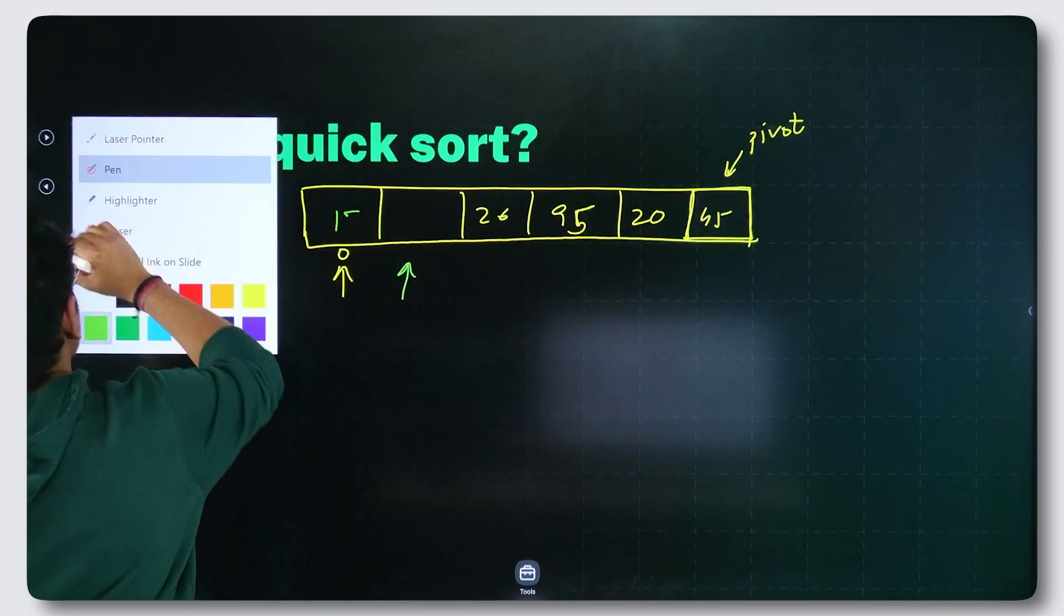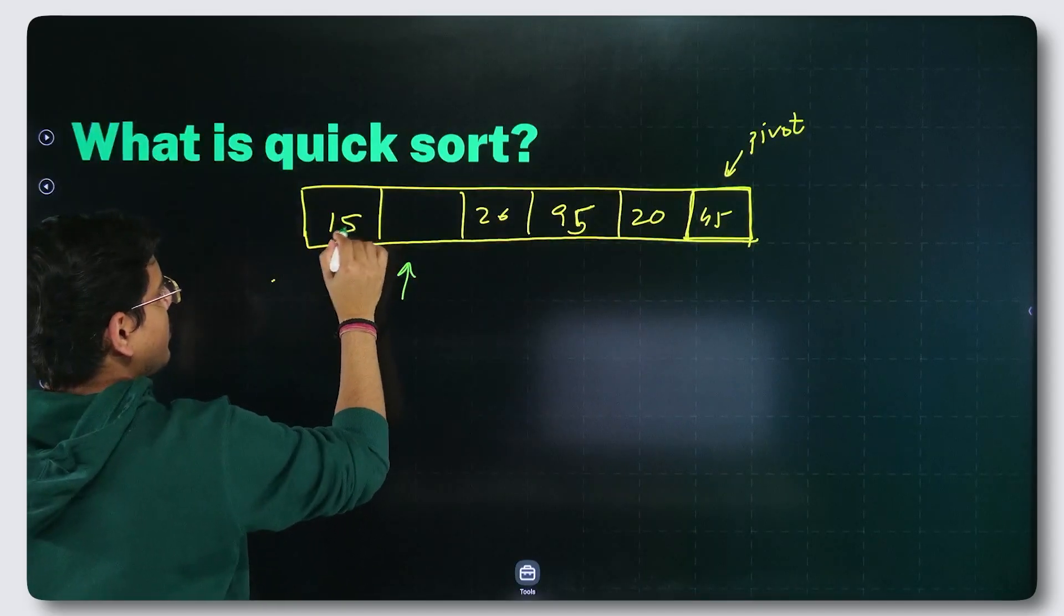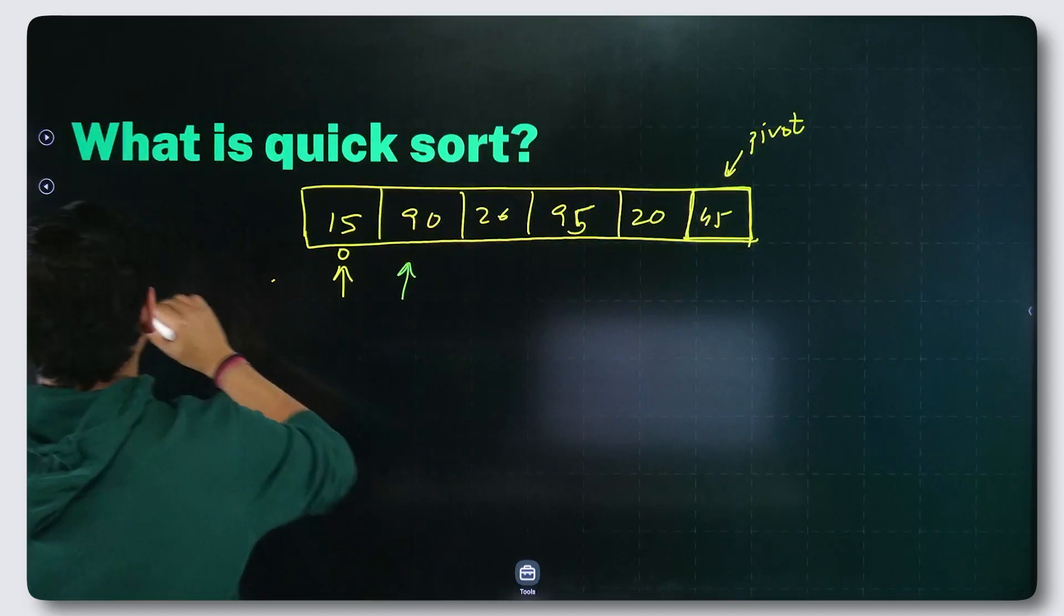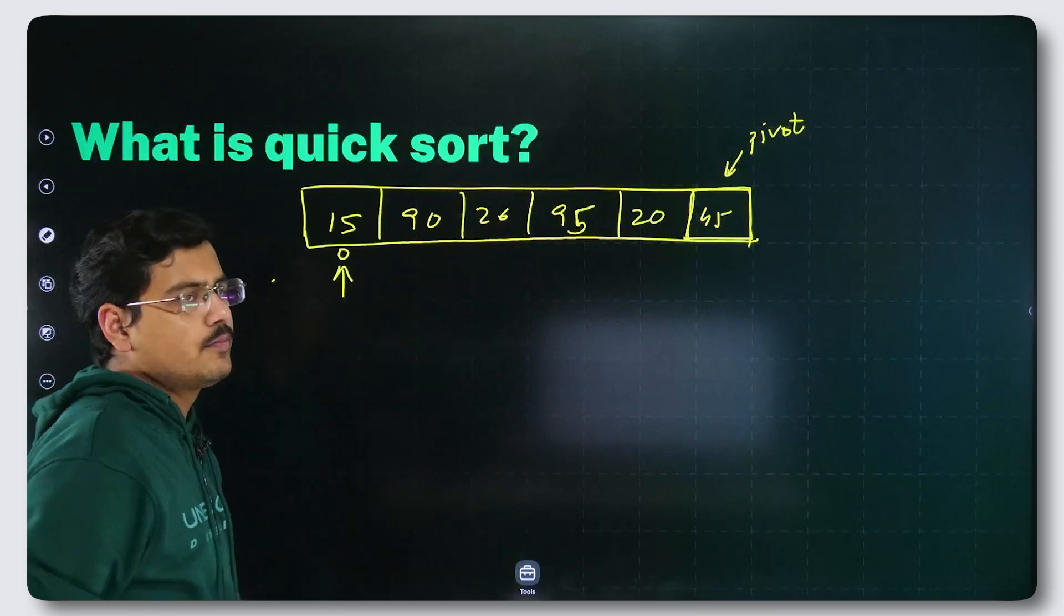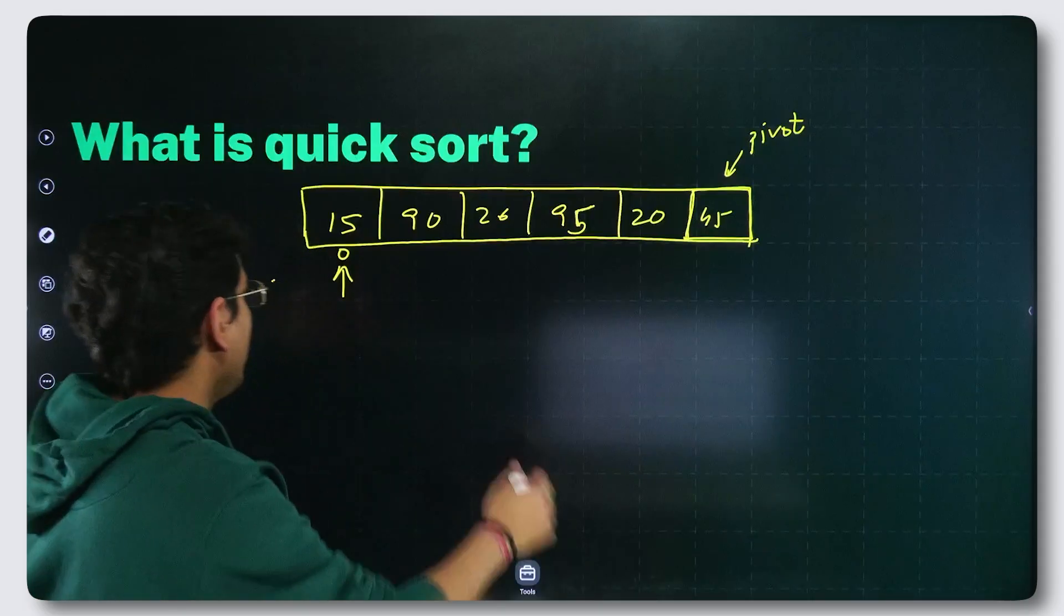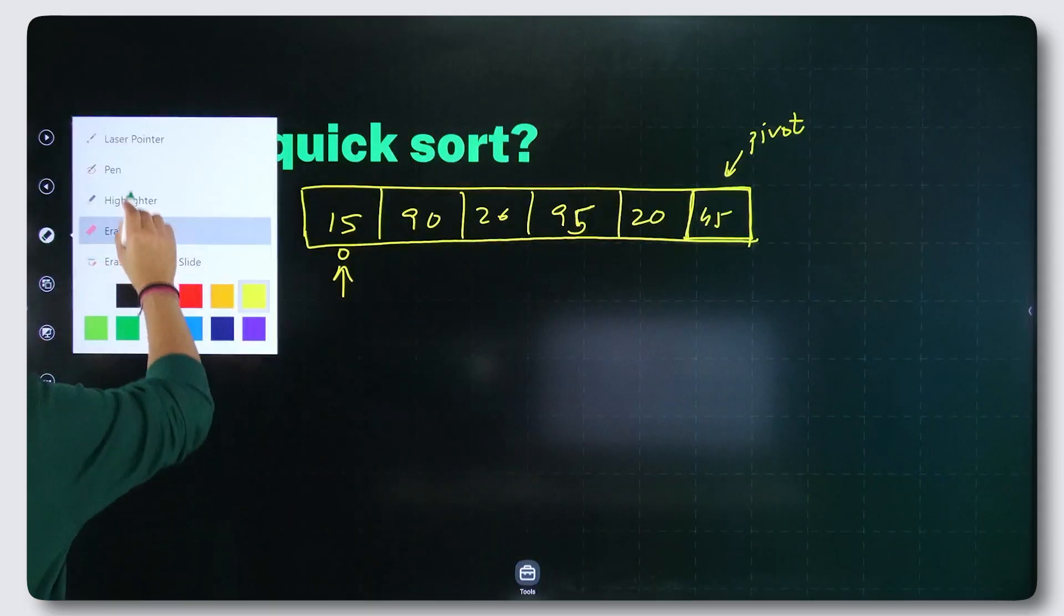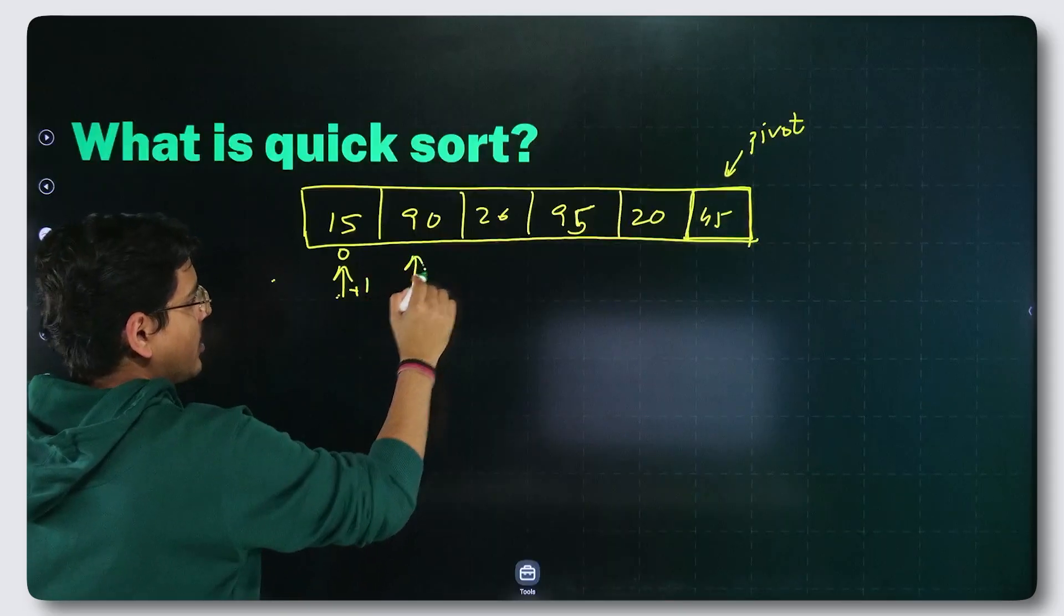15 comes here, 90 comes here. Now you go further. Check 26. 26 is also smaller than 45. What I will do is, again, first of all increment this pointer. Plus one happens, this pointer starts pointing here.